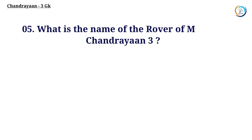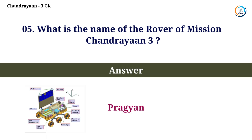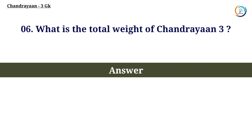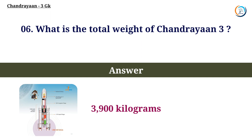What is the name of the rover of mission Chandrayaan-3? Answer: Pragyaan. What is the total weight of Chandrayaan-3? Answer: 3,900 kilograms.